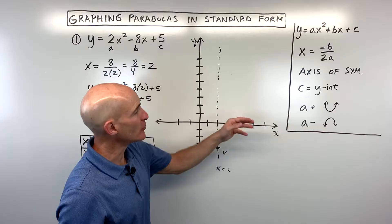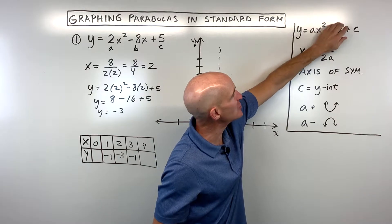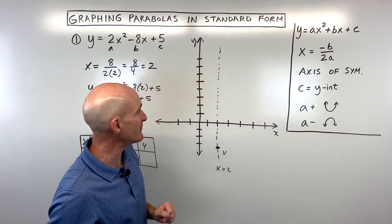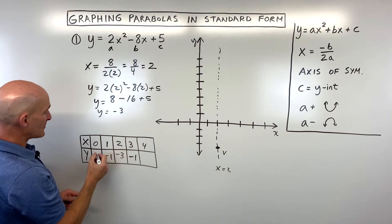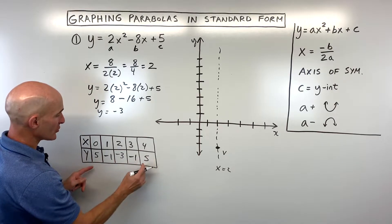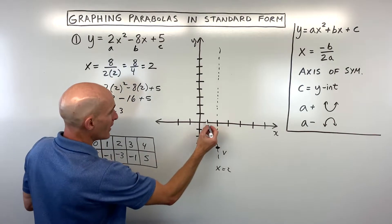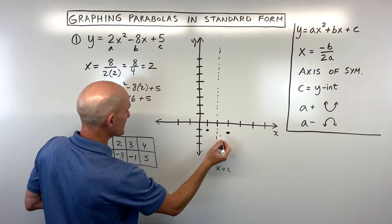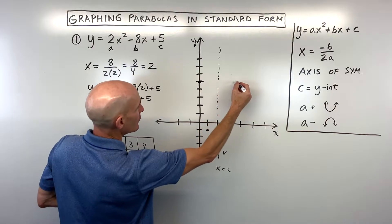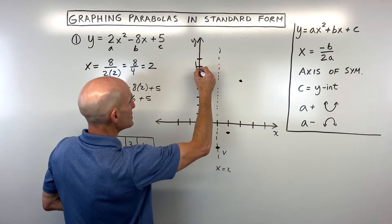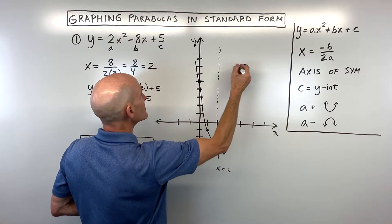The reason the c value is the y-intercept is because when you put 0 in for x, 0 times anything is 0, so it cancels out those two terms and the y-coordinate is just the c value. In this case, when we plug in 0, our y-intercept is at 5, which means the symmetric point is also 5. Plotting (1, negative 1) and reflecting it, then (0, 5) and reflecting it, gives us a pretty good sketch of our parabola.